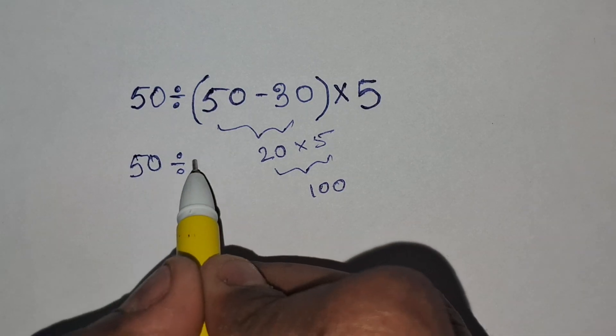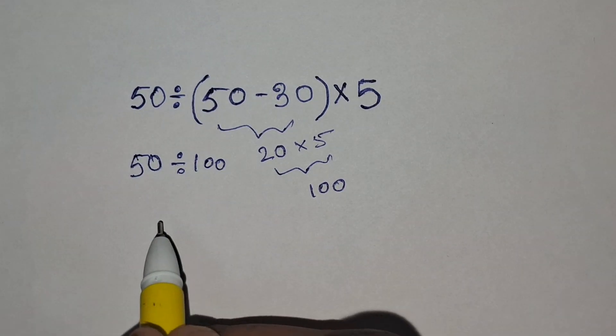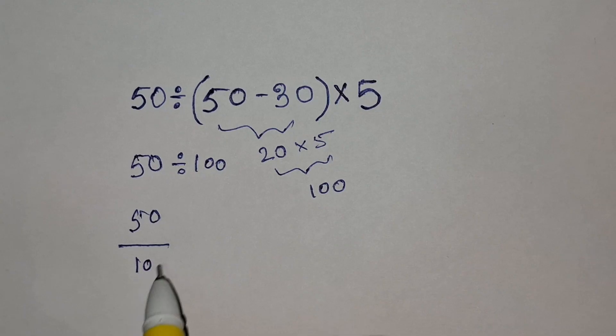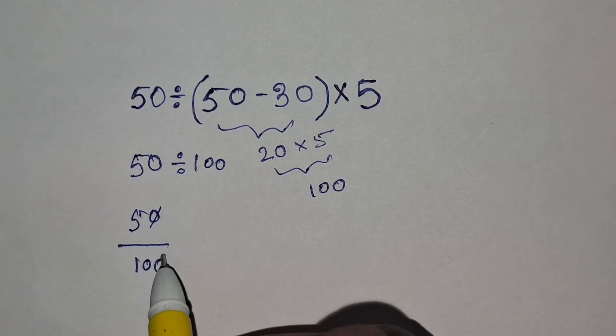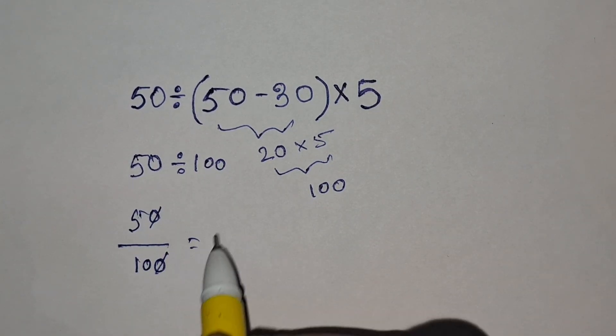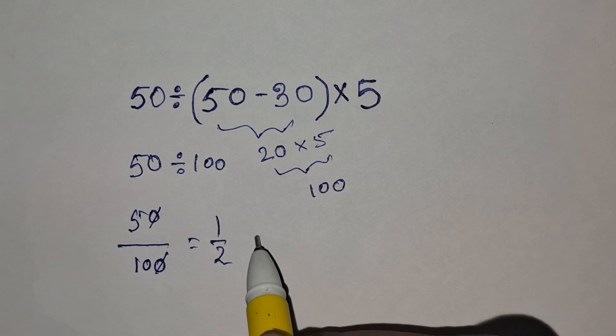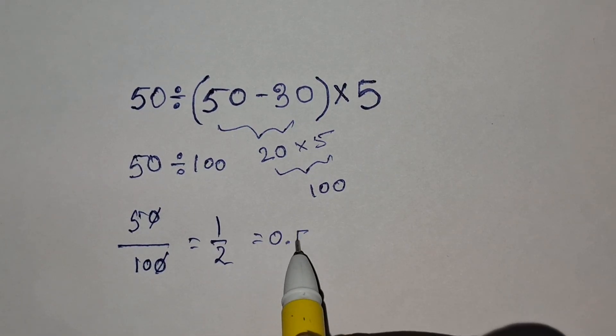So the expression becomes 50 divided by 100, which is 50 by 100. Eliminating zero, we get 50 by 100 equals 5 by 10 equals 1 by 2, that equals 0.5.